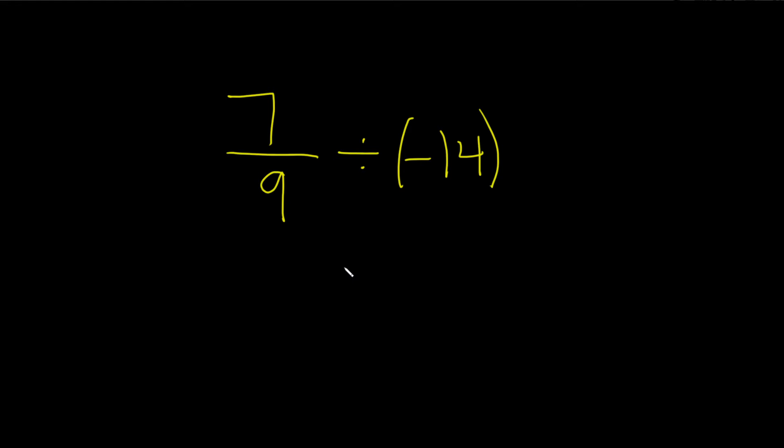7 over 9 divided by negative 14. So in order to do this problem, we first have to write this number as a fraction. So let's do that.